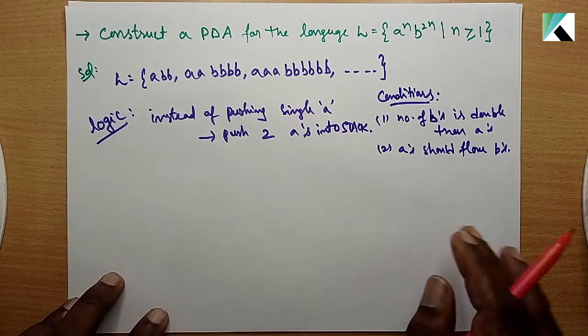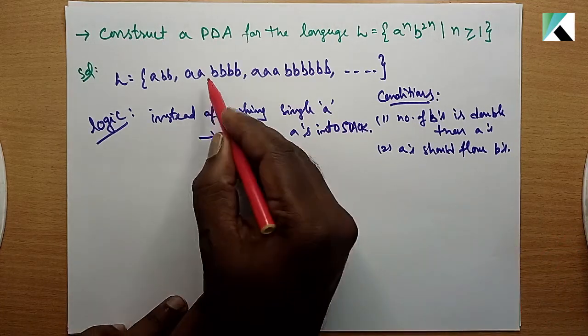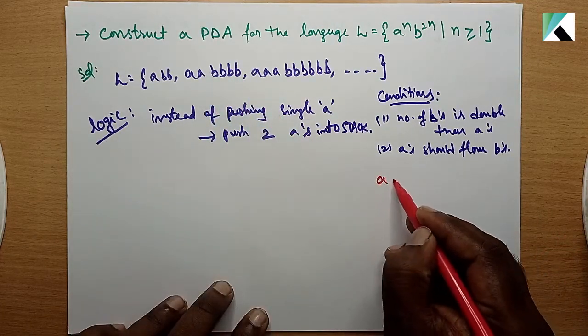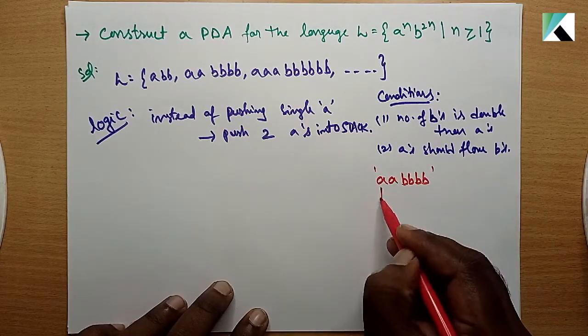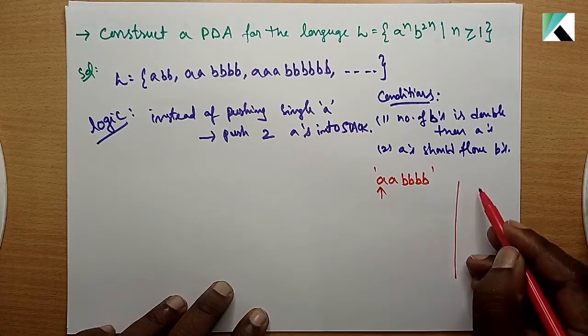Next we'll go with the example trace. Let's take the string w equals aabbbb. This is the string, and we'll trace it through the PDA with the top of the stack.